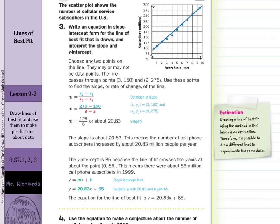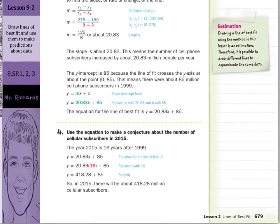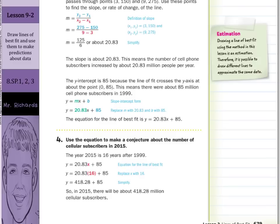Then what else can we do with this? Use the equation to make a conjecture about the number of cellular subscribers in 2015. Now the year 2015 is 16 years after 1999. Again, 2015 minus 1999. And so we're going to substitute those 16 years in for x. So 20.83 times the 16 plus the 85, you get 418.28 million cellular subscribers.